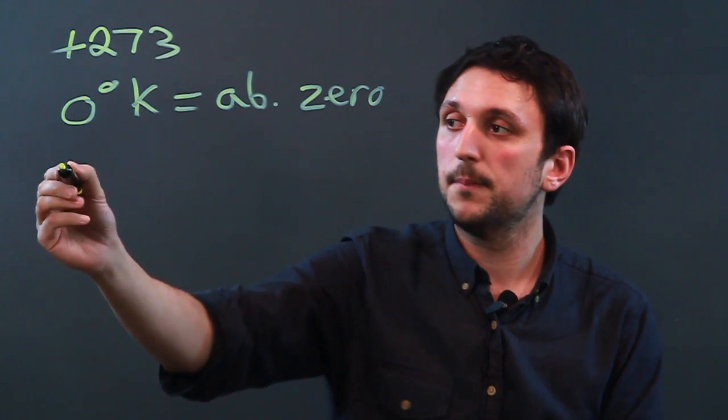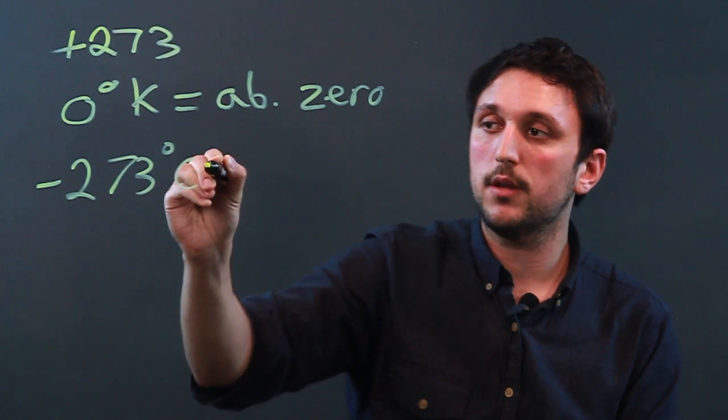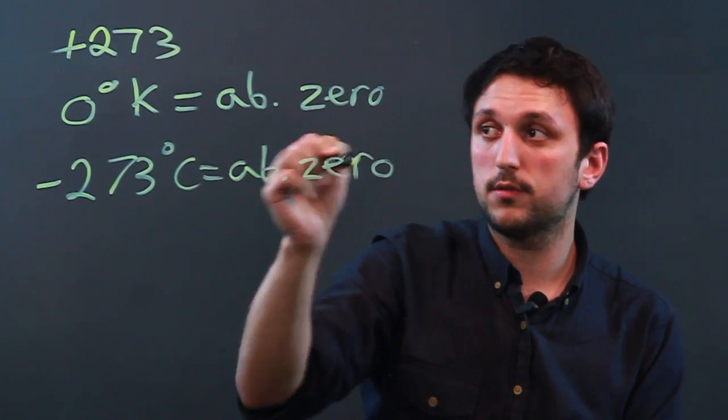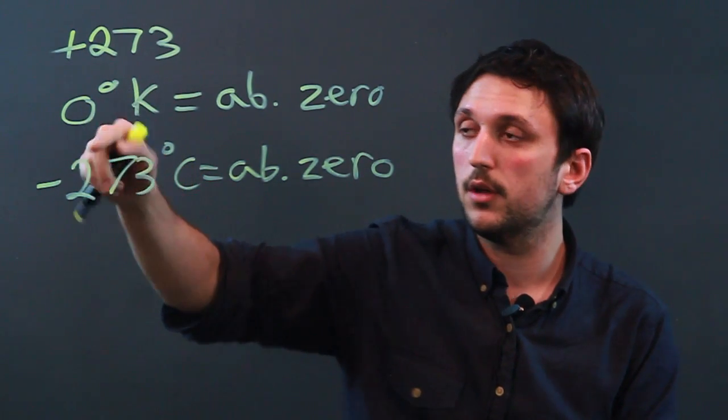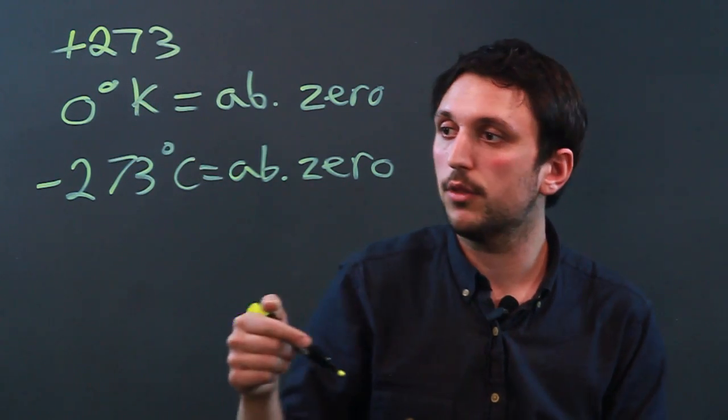Plus 273, because if you have negative 273 degrees Celsius, that's absolute zero. And each degree Kelvin is the same as a degree Celsius—they just start at a different point on the scale. So to go from negative 273 up to zero, we just add 273.